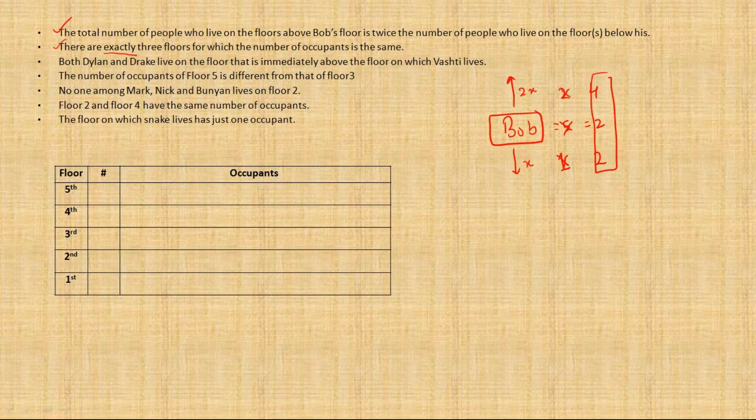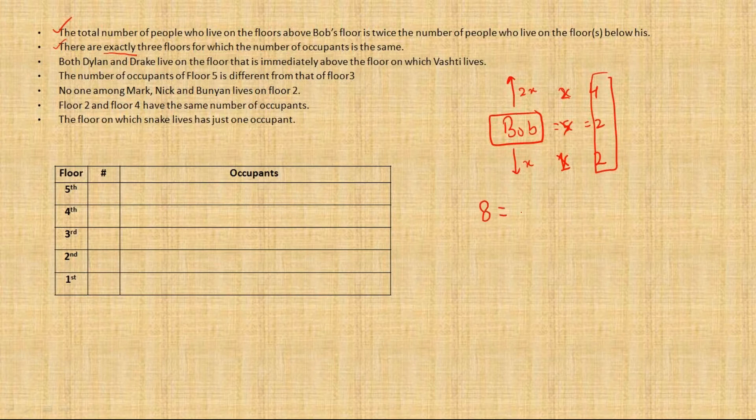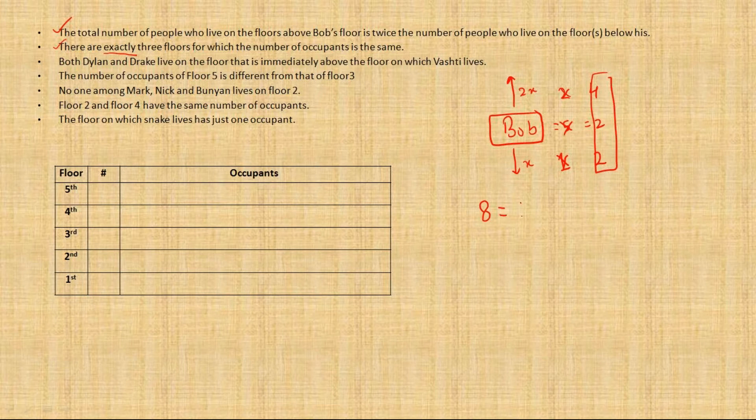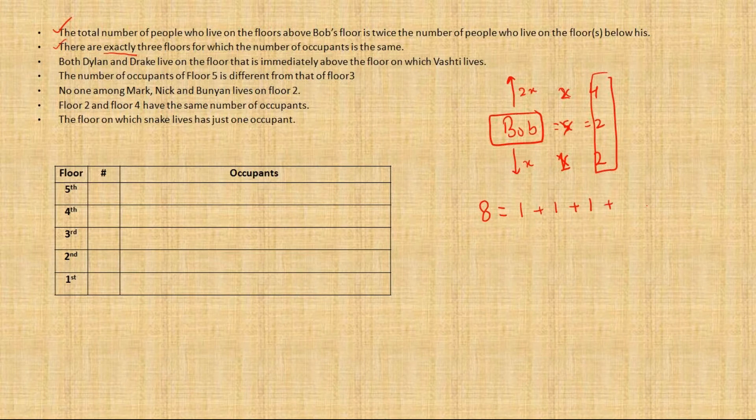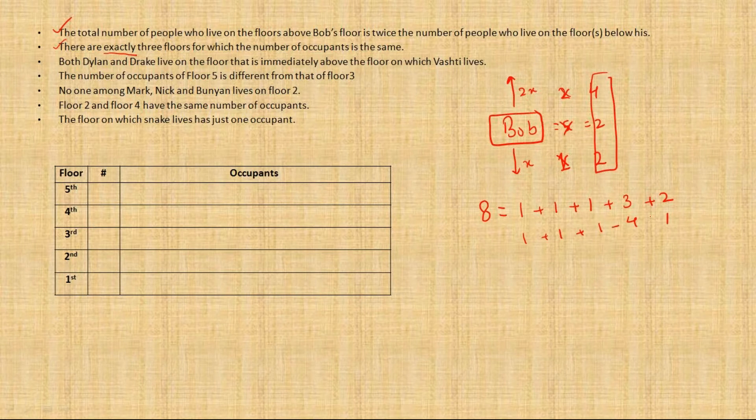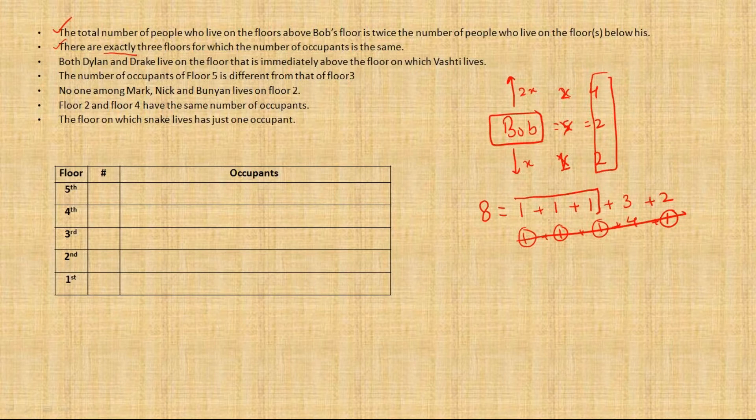Now let us see the second point. In between there are exactly 3 floors for which the number of occupants is the same. Now please understand, 8 is the number of occupants and you have to put exactly 3 numbers same. So let us start with that number being 1. So 1 is 3 times. Now 2 more numbers remaining. That could be 3 and 2. Now people ask me why can't it be 4 and 1? Then you see for yourself that if you put them 4 and 1, then there are exactly 4 numbers same, whereas exactly means neither more nor less.